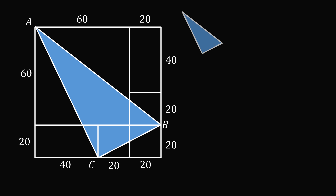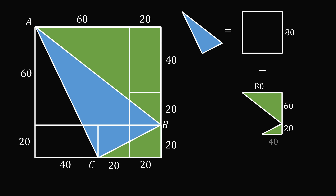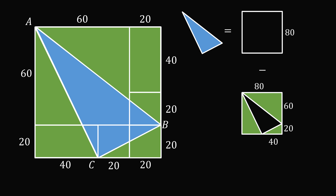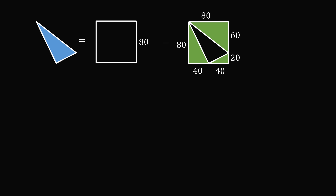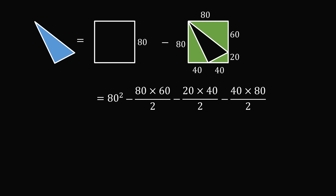The area of the triangle equals the area of the large square with a side length of 80, minus the areas of three different right triangles. One right triangle has side lengths of 80 and 60. A second right triangle has side lengths of 20 and 40. And a third right triangle has side lengths of 40 and 80. The area of the square equals 80 squared. The first triangle is 80 times 60 over 2, the second is 20 times 40 over 2, and the third is 40 times 80 over 2. We simply do this calculation and get the answer of 2000.